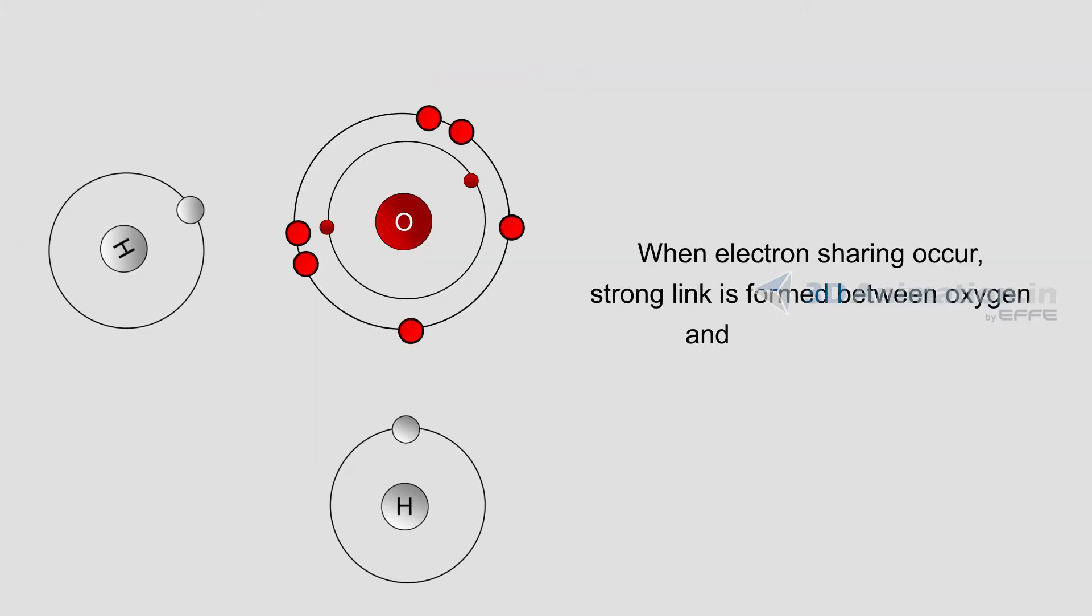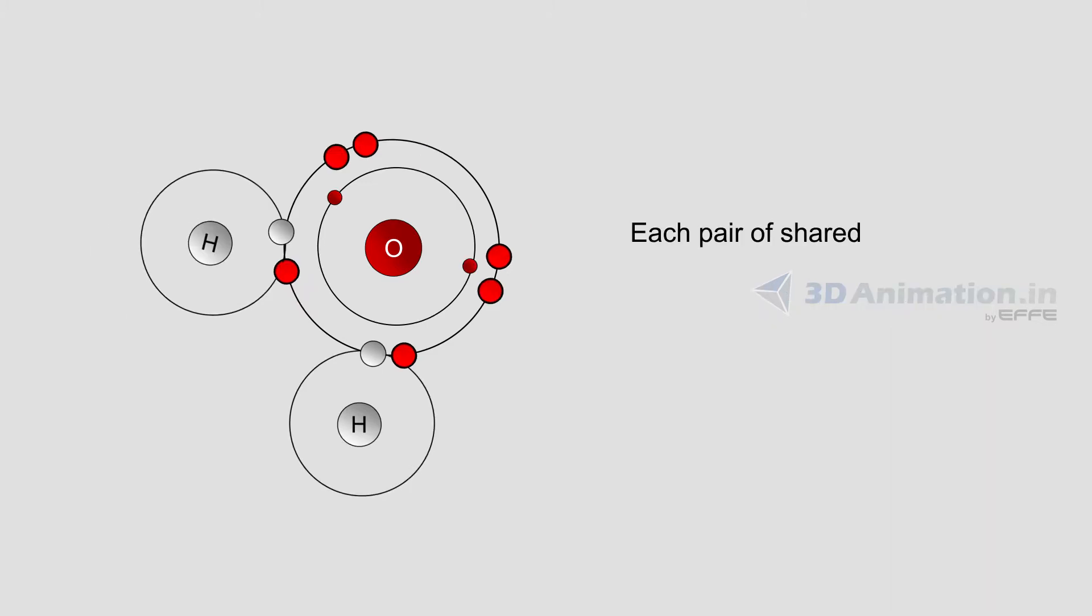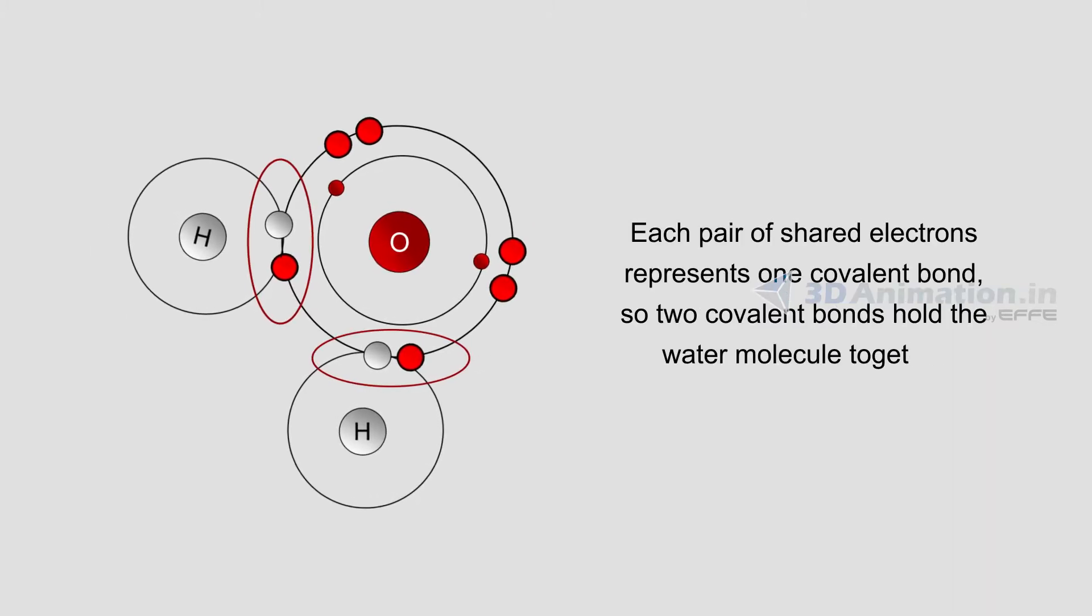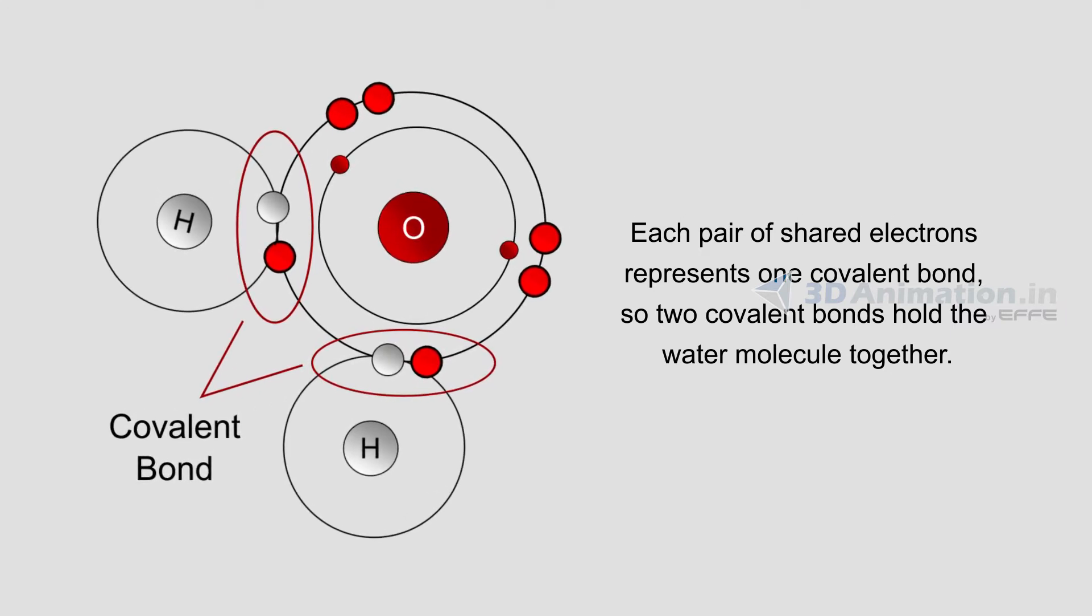When electron sharing occurs, a strong link is formed between oxygen and hydrogen atoms. Each pair of shared electrons represents one covalent bond. So two covalent bonds hold the water molecule together.